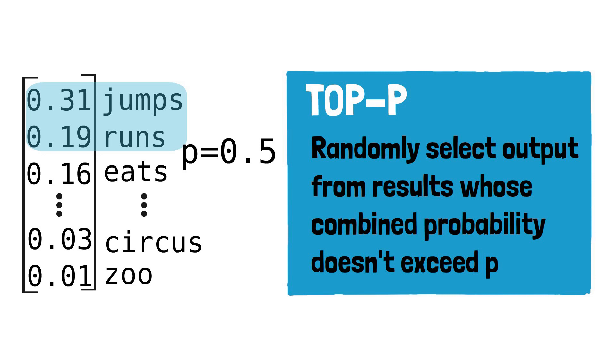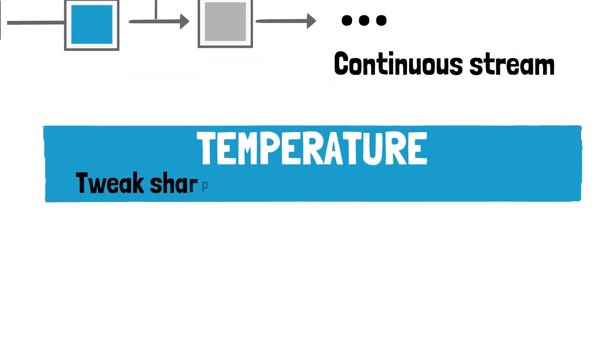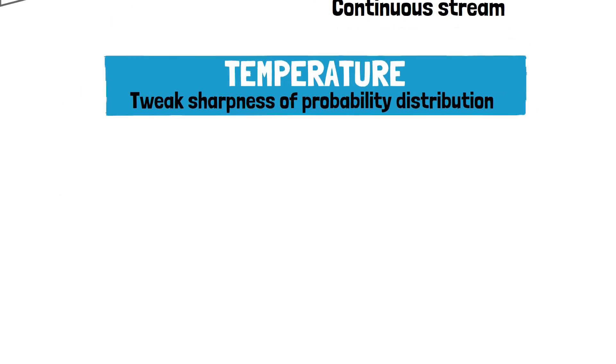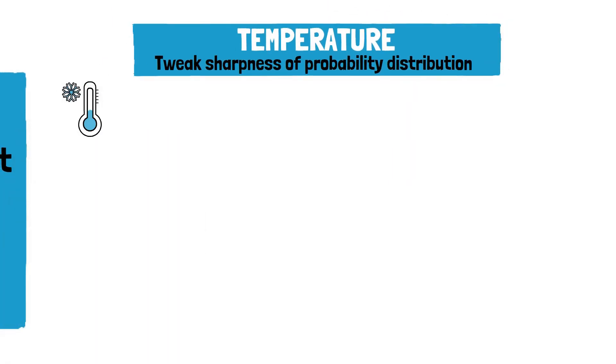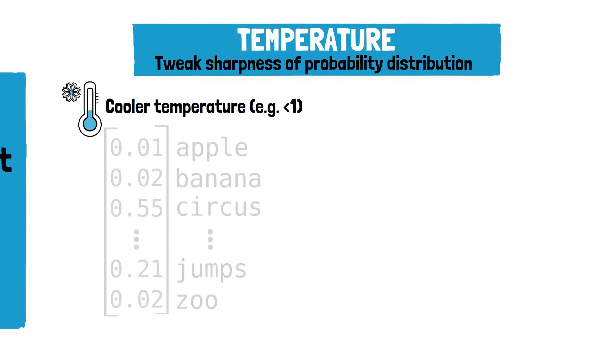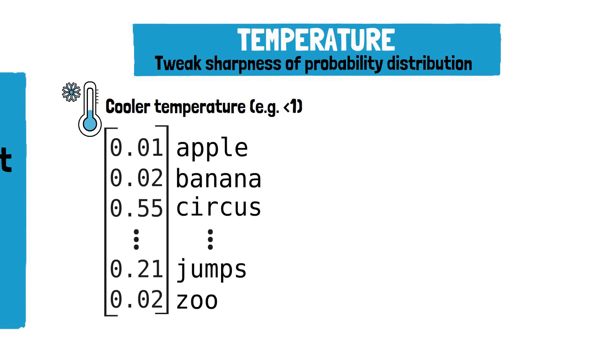Another parameter used is the temperature, which directly impacts the probability distribution of the upcoming token. Think of it as tweaking the sharpness of this distribution. When the temperature is set to a value less than 1, the softmax probability distribution becomes sharp. What this means is when selecting the next word, the model will more often lean towards the highest probability word it recognized during training, resulting in more predictable and consistent output.